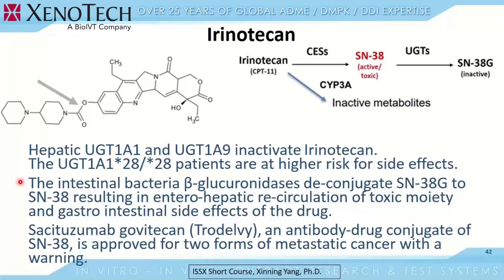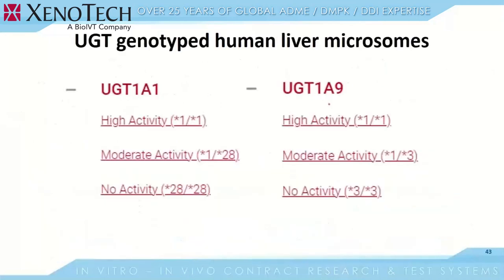Sacituzumab govitecan is an antibody-drug conjugate of SN-38 approved for two forms of metastatic cancer with a warning. The label contains a warning for increased risk of neutropenia, febrile neutropenia, and anemia in UGT1A1*28 allele homozygous patients. For those interested in studying genetic effects of specific alleles, individual human liver microsomes that have been genotyped are available as wild-type homozygous, heterozygous, or homozygous for alleles associated with no activity — STAR28 or STAR3 in UGT1A1.